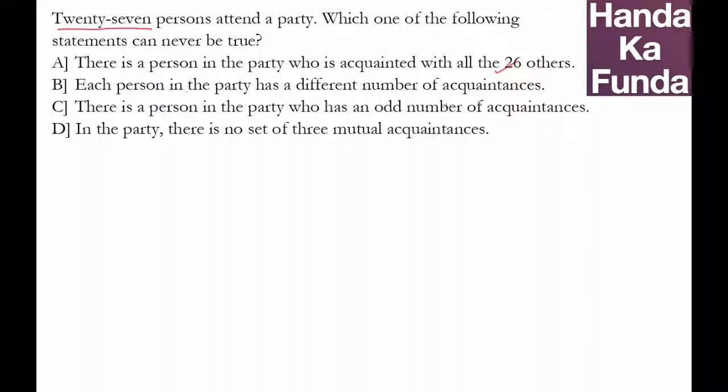There is a person in the party who has an odd number of acquaintances. That is also quite possible. There is nothing wrong with this. It's possible that I am there at the party and I know only one person who is you.